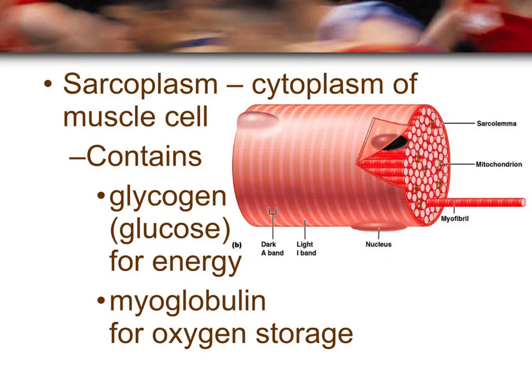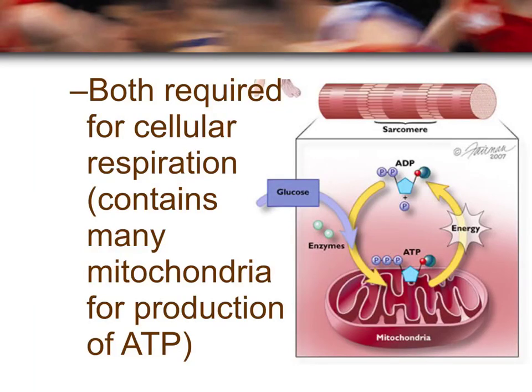Sarcoplasm is the cytoplasm of the muscle cell — all of the jelly-like material that every other structure inside the cell is surrounded by. The sarcoplasm contains glycogen, which is a form of glucose needed for energy, and myoglobin, which provides oxygen. Both glycogen and myoglobin are required for cellular respiration, which occurs in the mitochondria and produces ATP, a form of energy source.